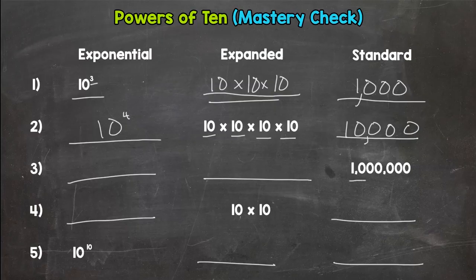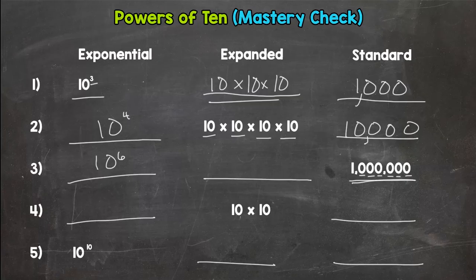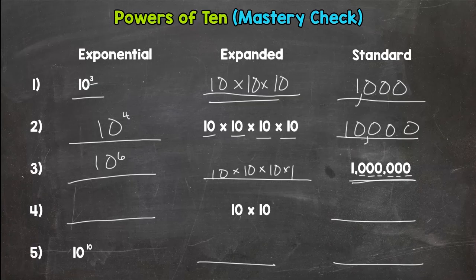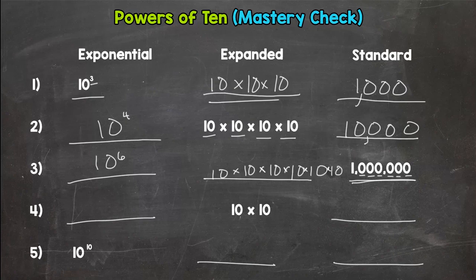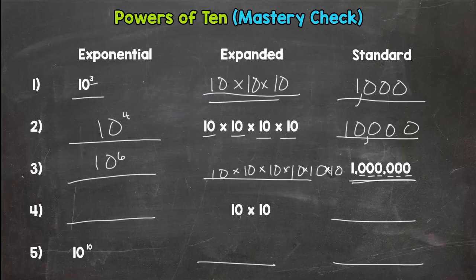Number three we have one million, so let's think of the exponential form first. We have one, two, three, four, five, six zeros, so that is ten to the sixth power. In the expanded form you should have six tens, one, two, three, four, five, so one more. Sorry, I'm running into the million there, that looks like a forty. That should be six tens expanded out.